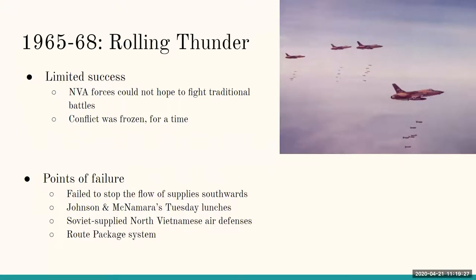Rolling Thunder had a number of points of failure. First, it failed to stop the flow of supplies southwards. The Ho Chi Minh Trail was used by North Vietnam to move supplies like ammunition and food to the guerrillas in South Vietnam. It was not a highway as we might think — it was a series of really small trails constantly moving through the jungle. Trying to bomb such a target from 40,000 feet in the air was not a success story. Furthermore, Johnson and McNamara had their so-called Tuesday lunches, where they would sit down with a map of Vietnam and select each target by hand — not an efficient way of target selection, since commanders on the ground didn't have the luxury of waiting an entire week for new targets.